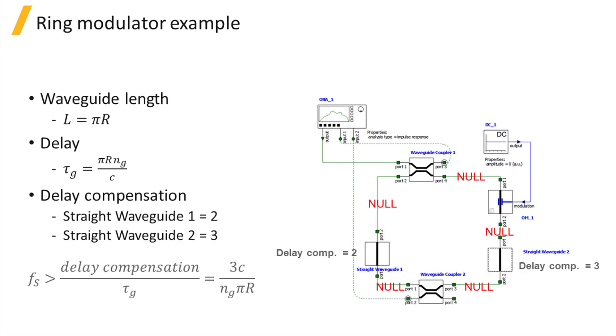But first let's take a quick look at the ring modulator. The length of each waveguide is π times the radius, so the group delay for each is π times r times the group index divided by the speed of light. One waveguide has a delay compensation of 2, while the other is 3. This means that the sample rate should be greater than 3 divided by the group delay, as 3 is the larger of the delay compensations.